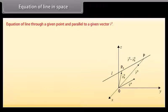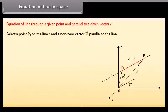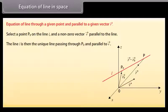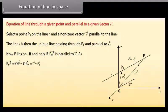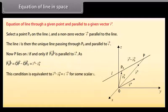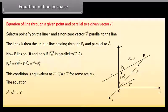Equation of line in space. Equation of line through a given point and parallel to a given vector V. Select a point P0 on line L and a non-zero vector V parallel to the line. The line L is the unique line passing through P0 and parallel to vector V. Now P lies on L if and only if vector P0P is parallel to vector V, where vector P0P equals vector R minus vector R0. This condition is equivalent to vector R minus vector R0 equals T times vector V, which is called the vector equation of the line L.